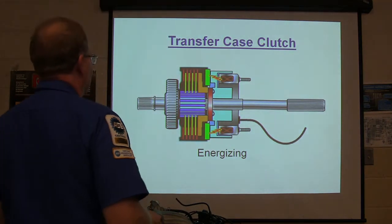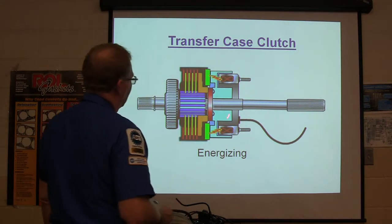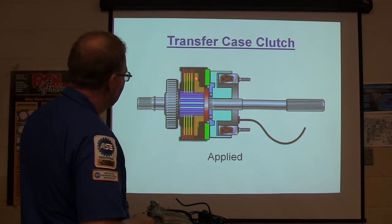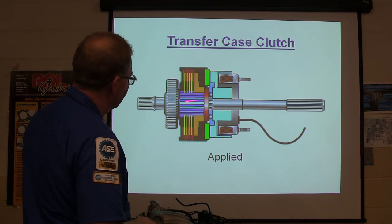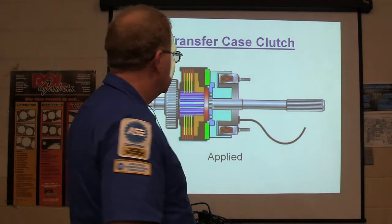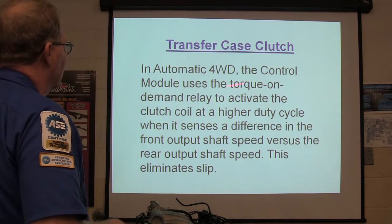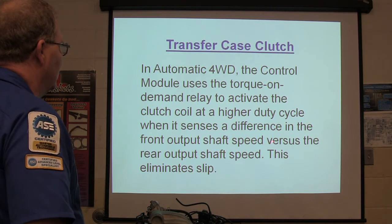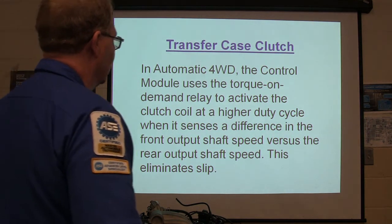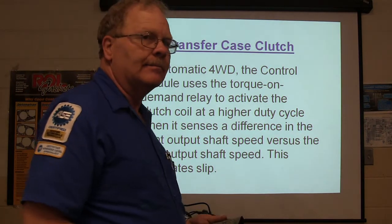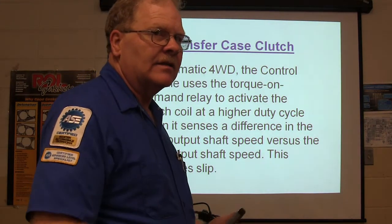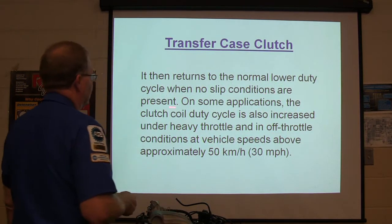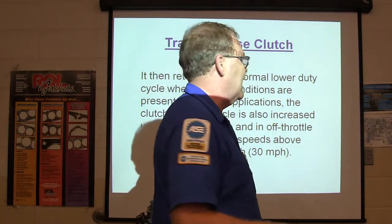In automatic four-wheel drive, the module uses the torque-on-demand relay to activate the clutch at a higher duty cycle when it senses a difference in front output shaft speed versus rear output shaft speed — that eliminates tire slip. It returns to a normal lower duty cycle when no slip conditions are present, so it only uses four-wheel drive when it needs to. That saves gas. The clutch engagement also increases under heavy throttle conditions above 30 miles per hour.